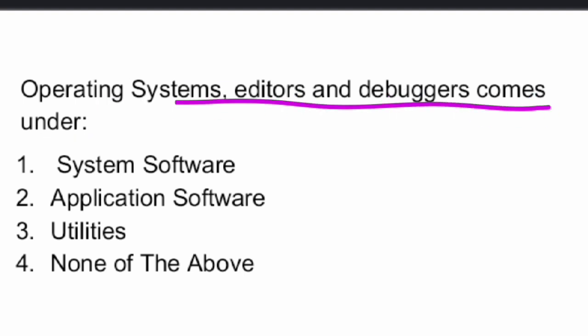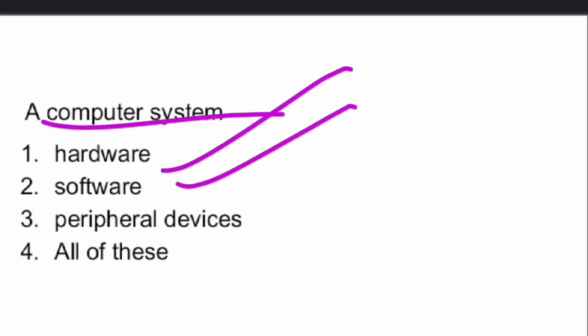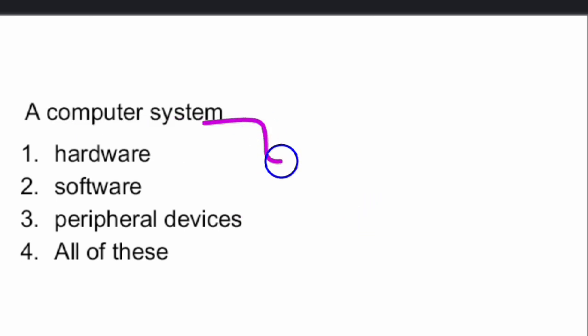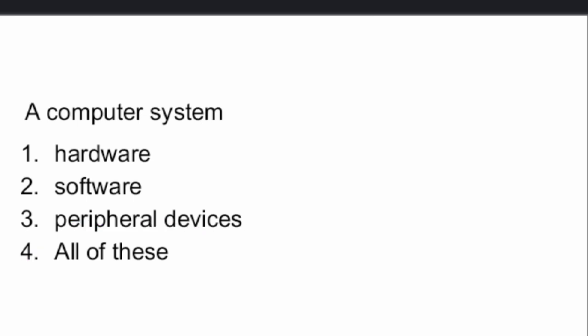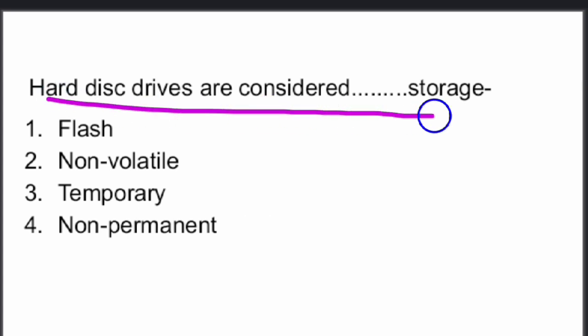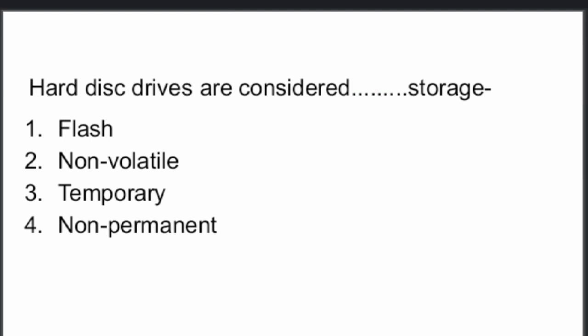A computer is hardware, software, and also has peripheral devices, so option three — all of these — is the right answer. Hard disk drives are considered as non-volatile storage — option two.